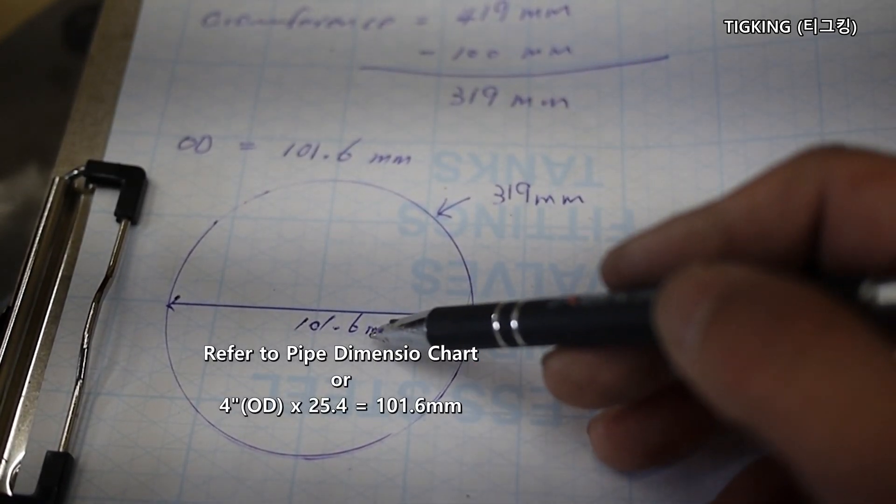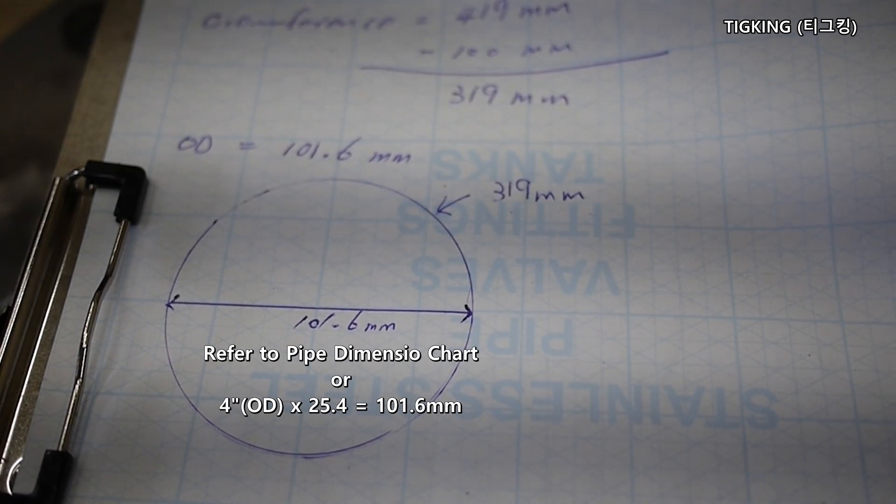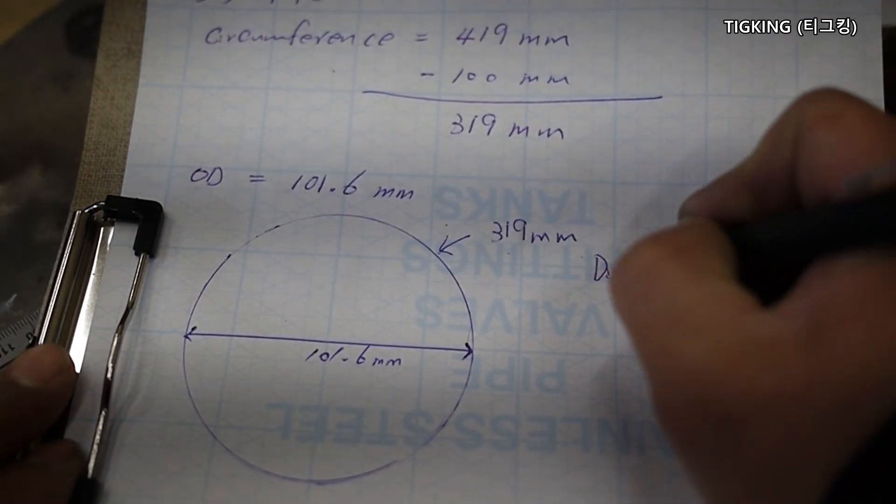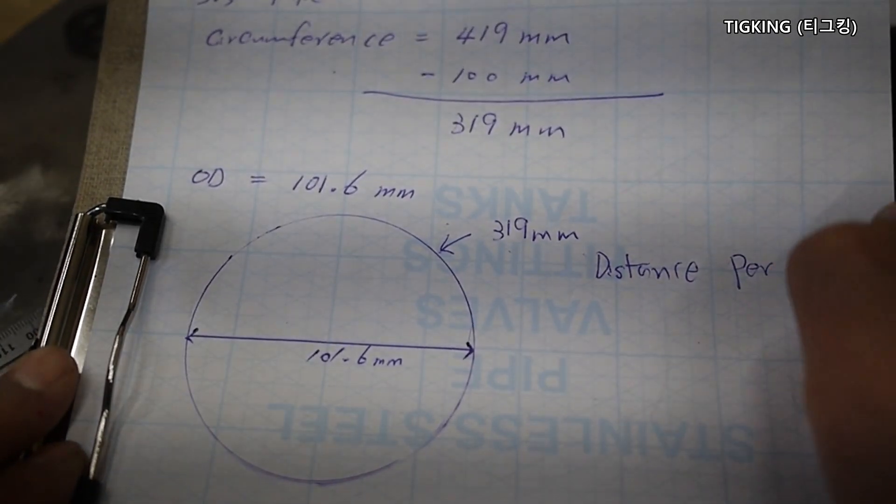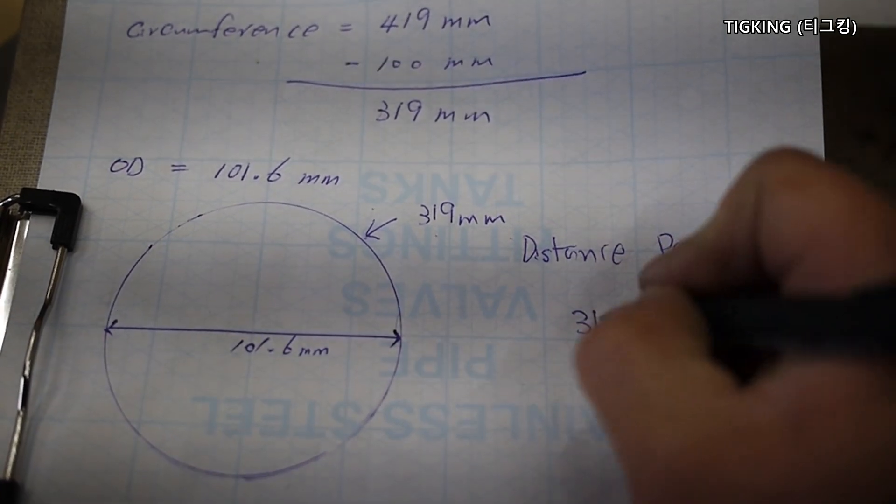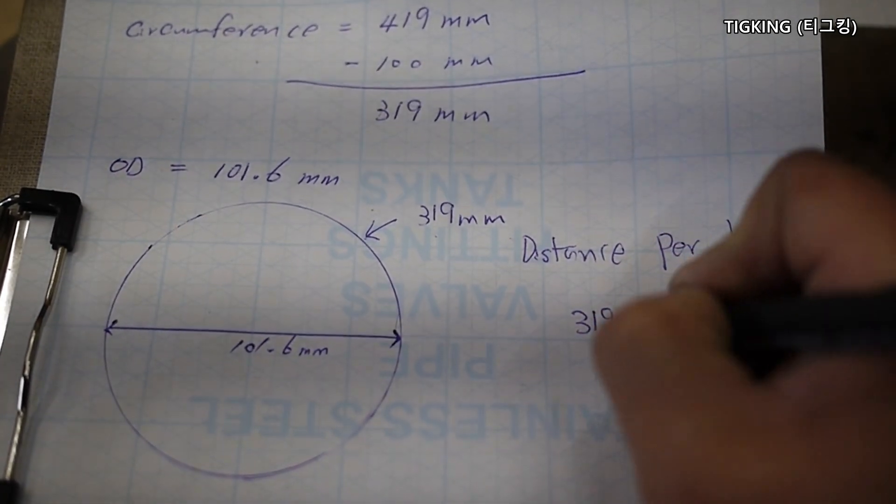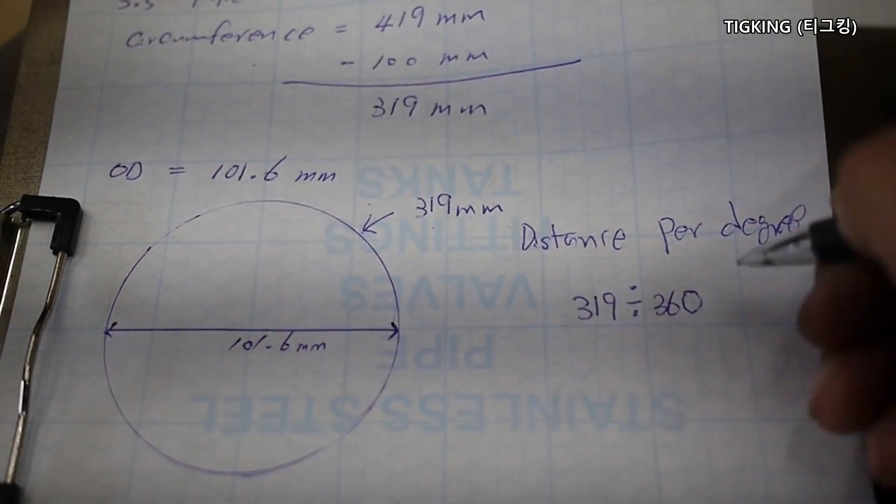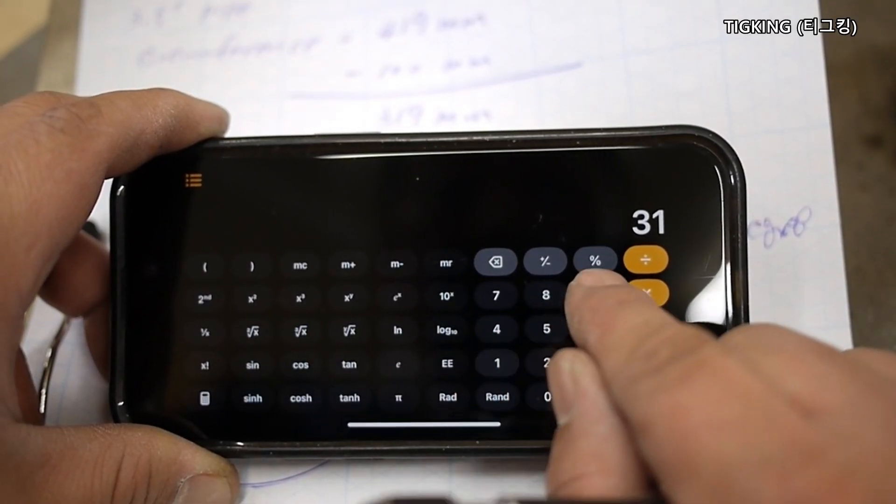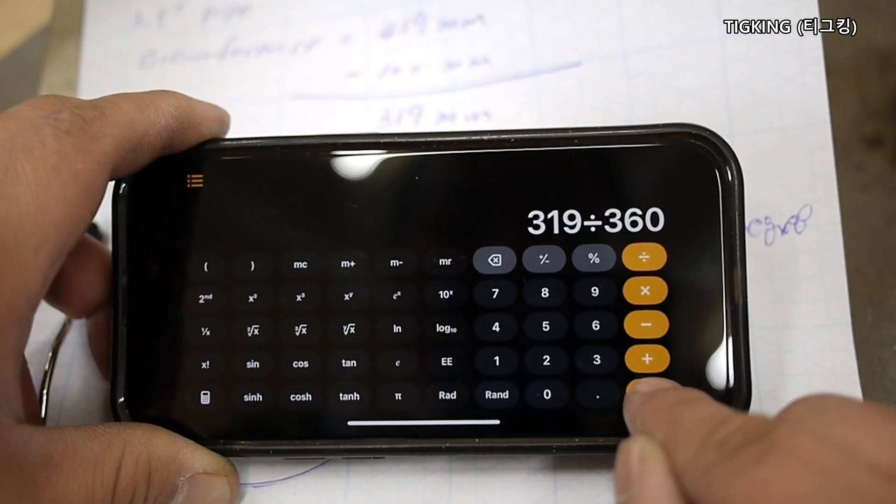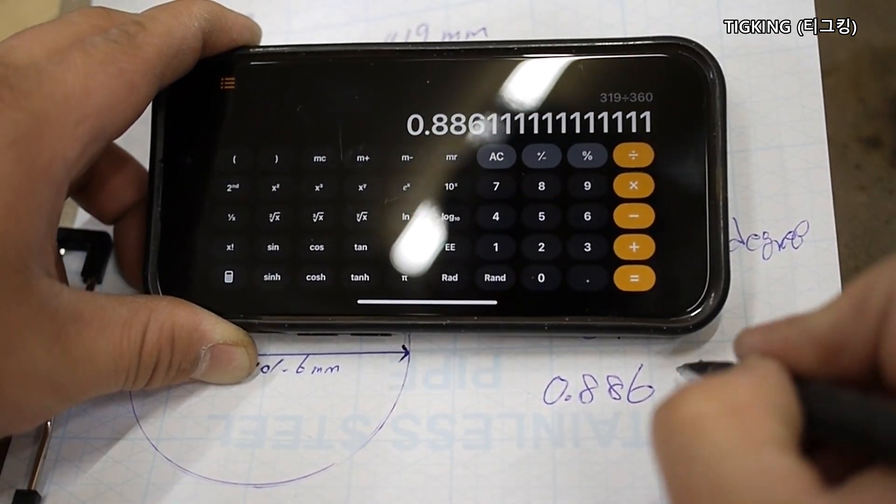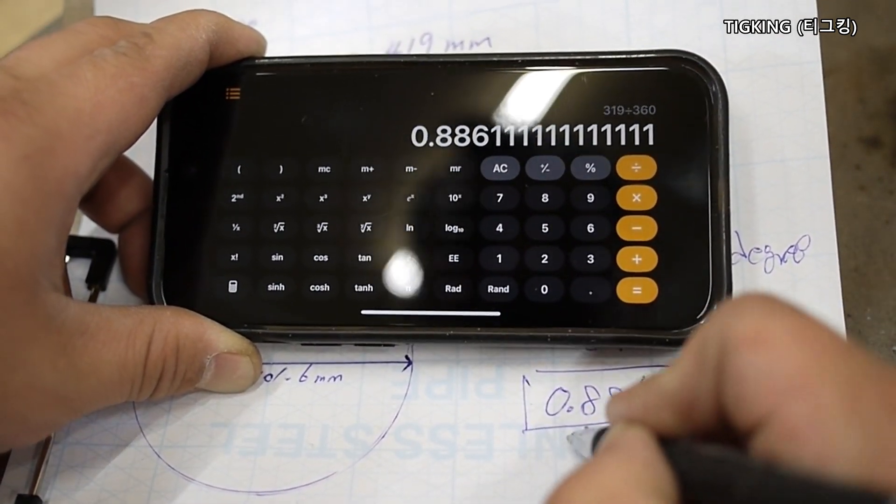And the outside diameter is 101.6 mm. Now, it's time to find out the distance per degree. If I can calculate this, I can mark any angle on the pipe. The distance per degree can be calculated by dividing the circumference into 360 degrees. The circumference 319 divided by 360 is 0.886. The distance per degree is 0.886 mm.